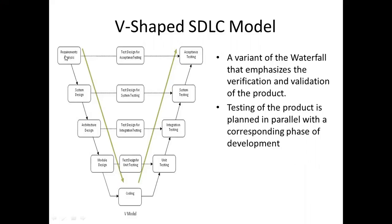In the waterfall model, testing activities start only after requirements, design, and implementation are all completed. But in the V shape model, testing happens parallel to development activities. It starts from requirement analysis, and during requirement analysis the testing team will be preparing the acceptance testing.